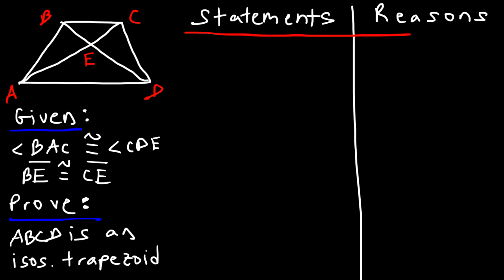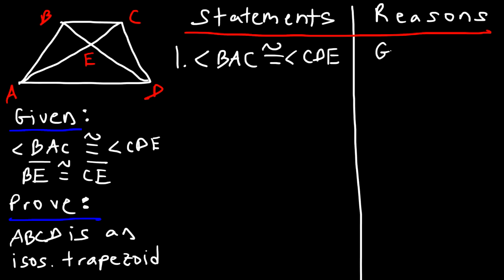Starting with the given information: Statement 1 — angle BAC is congruent to angle CDE. This is given. Let's mark it on the diagram: here is angle BAC and here is angle CDE, so this angle is congruent to that angle.